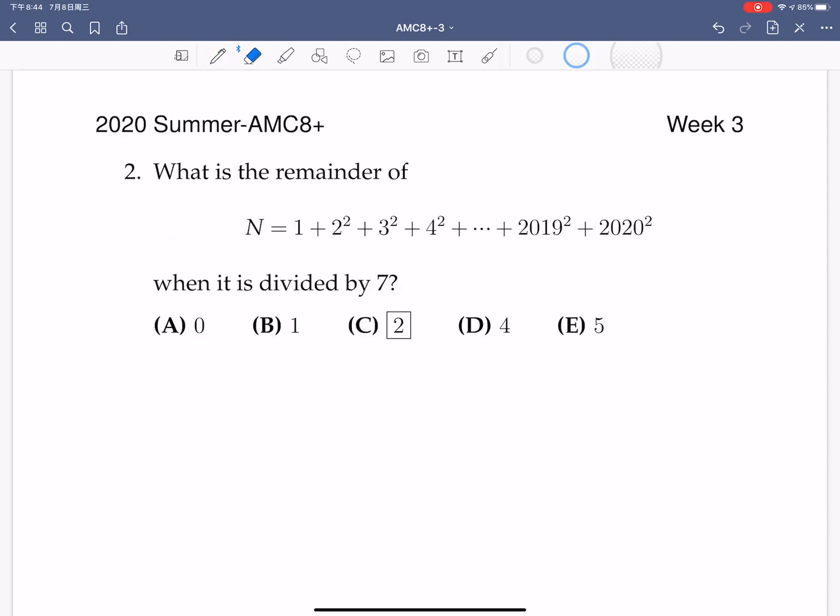Problem number 2. What is the remainder of capital N divided by 7? So the key to solve this problem is to find the pattern of the remainders. So we'll start with the first seven terms. 1 square, 2 square, 3 square, 4 square, 5 square, 6 square, 7 square.